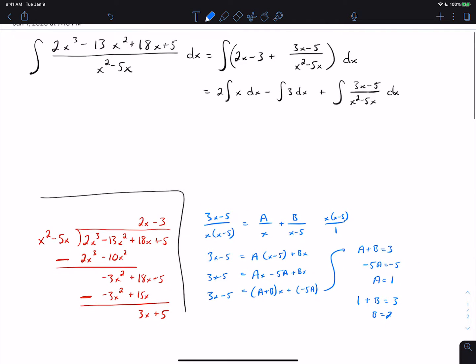That takes us back to these integrals. The first integral is 1 half x squared and has nothing to do with the decomposition. The second one is 3x. The third one, based on the partial fractions decomposition in blue, can be rewritten as 1 over x plus 2 over x minus 5.